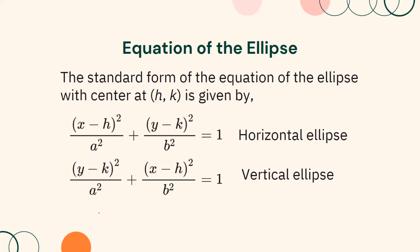In finding the equation of an ellipse, it is very important to determine the orientation of the ellipse, the center of the ellipse, and the values of a and b. It will also be easier to graph the given to establish the relationship among them and help you in analyzing the problem.